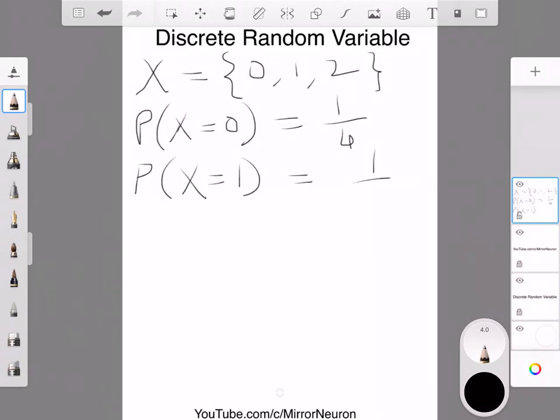So this is equal to half, we saw in our previous video. And what is the probability of getting our random variable X being 2 heads? Again, this is about 1 by 4.